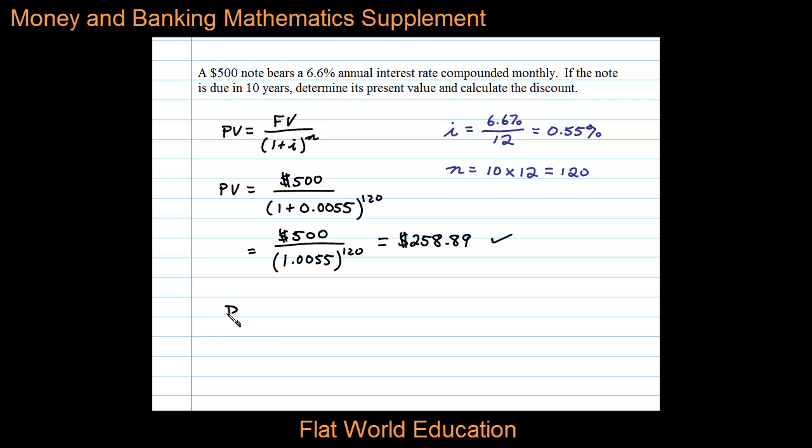Now the discount is equal to the future value less the present value. In this case, the future value is $500 and we'll subtract the $258.89, and that gives us $241.11.